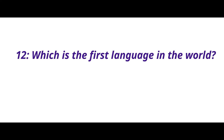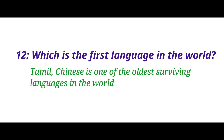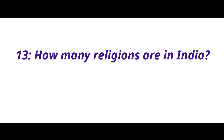Which is the first language in the world? The answer is Tamil and Chinese — it is one of the oldest surviving languages in the world. How many religions are in India? The answer is 9.